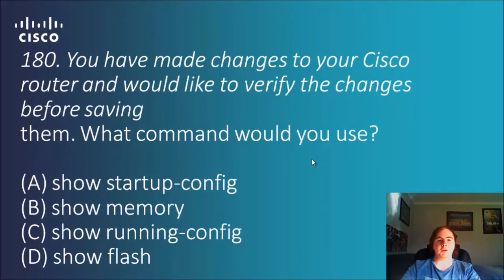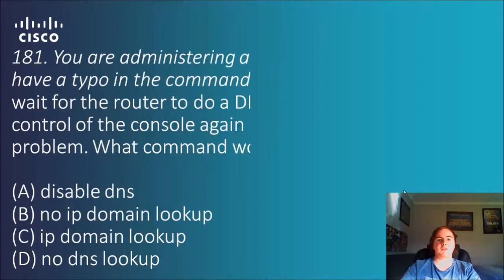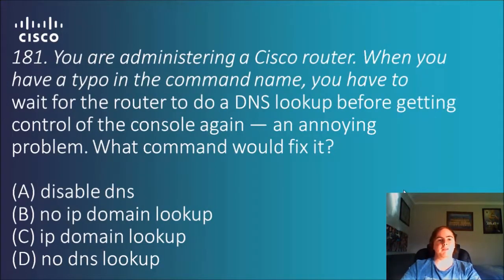Question 180: You have made changes to your Cisco router and would like to verify the changes before saving them — what command would you use? Options: 'show startup-config', 'show memory', 'show running-config', 'show flash'. Recent changes are in volatile memory, so 'show memory' isn't relevant and 'show flash' is for flash storage. Startup-config is loaded at boot, so the answer is 'show running-config'. When you're done, save those changes and they'll go to startup-config.